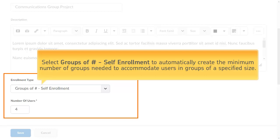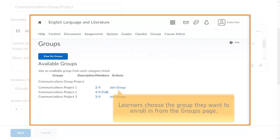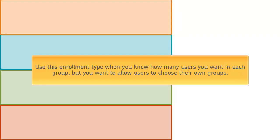Select 'Groups of Number Self-Enrollment' to automatically create the minimum number of groups needed to accommodate users in groups of a specified size. Learners choose the group they want to enroll in from the groups page. Use this enrollment type when you know how many users you want in each group but want to allow users to choose their own groups.